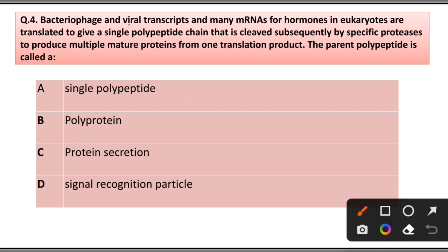Question number 4: Bacteriophage and viral transcripts and many mRNA for hormones in eukaryotes are translated to give single polypeptide chains that are cleaved subsequently by specific proteases to produce multiple mature proteins from one translation product. The parent polypeptide is called: A) Single polypeptide, B) Polyprotein, C) Protein, D) Secretion signal recognized particles. Answer is option B, polyprotein.